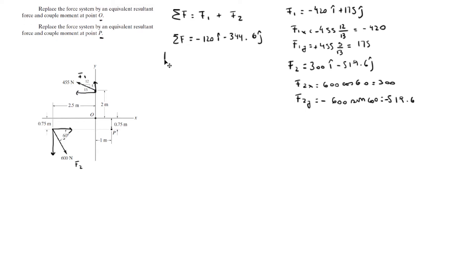So they want you to find the magnitude. And the magnitude is given by 120 squared plus 344.6 squared all square rooted. And that gives you 364.9 newtons, because we're using newtons. And the angle is given by the tangent inverse of 344.6 over 120, which gives you 70.8.